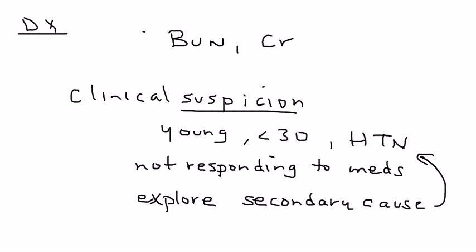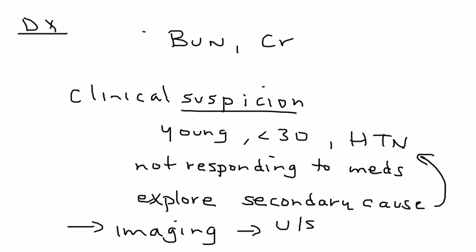Something just doesn't seem right, so the best thing to do is an imaging study of the kidneys. The most cost-effective imaging study is an ultrasound of the renal arteries. That will give you the answer if the patient indeed has renal artery stenosis, either due to occlusion or some other pathology such as atherosclerosis or fibromuscular dysplasia.